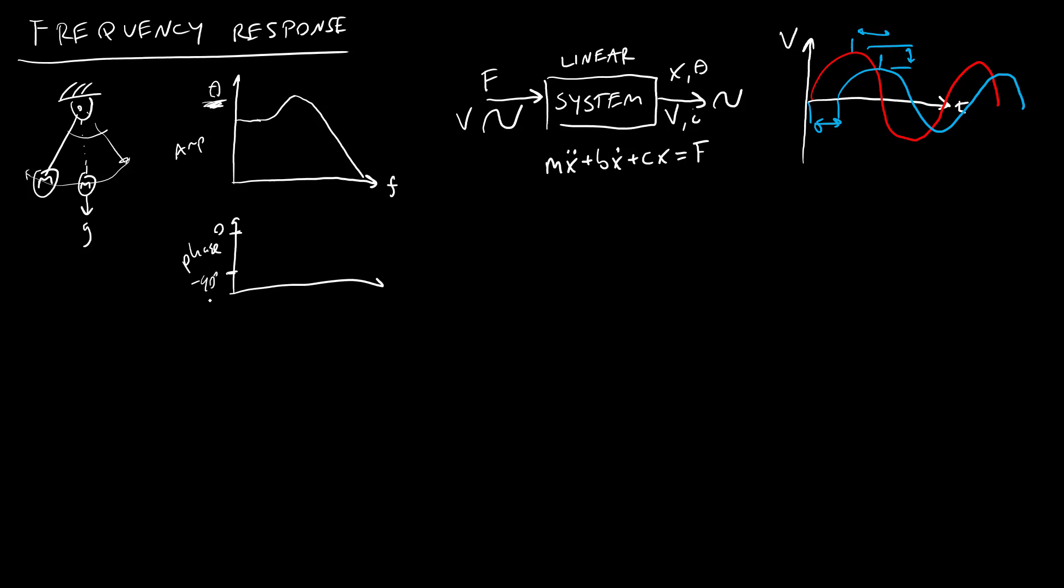We might go down to, sorry, I didn't really extend my axis far enough there, but negative 90 or negative 180 degrees. It might look something like that, depending on the system, where when I say 180 degrees, means they are perfectly out of phase. So the output is the opposite of the input.